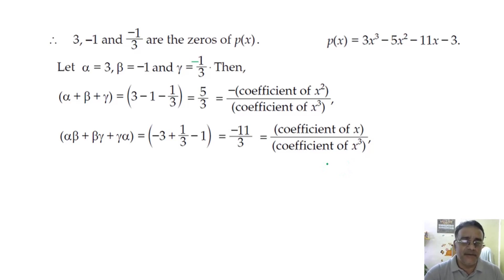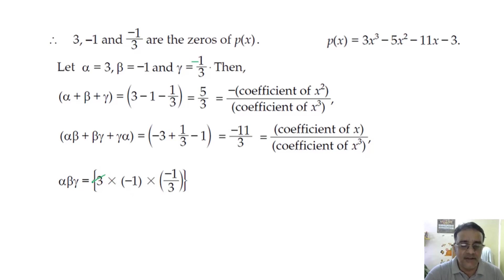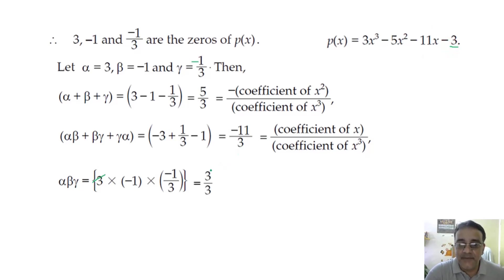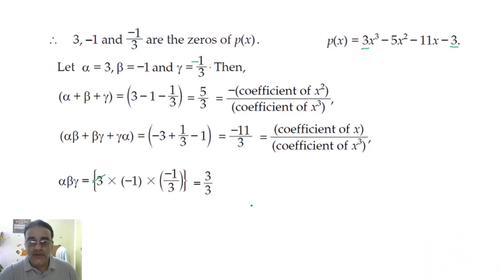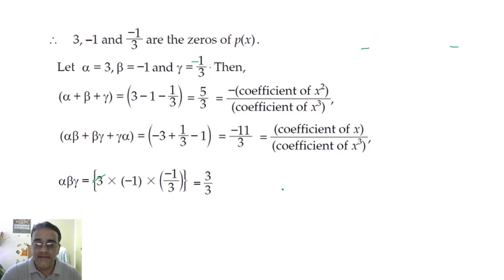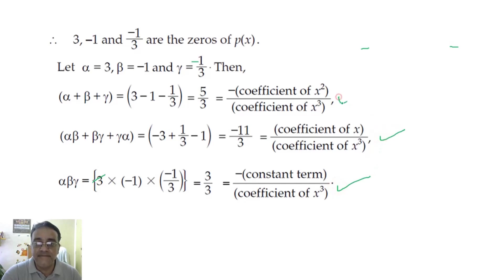For the product αβγ: 3 × (−1) × (−1/3) = 3/3 = 1. This equals −(constant term)/(coefficient of x³) = −(−3)/3 = 1. ✓ All three relations are verified.